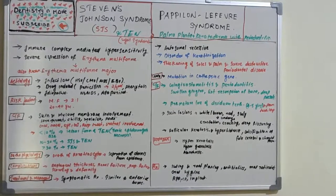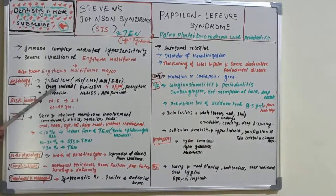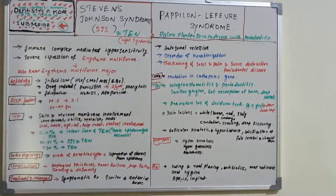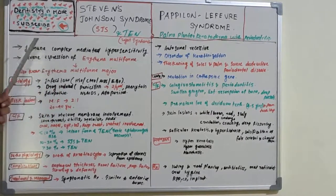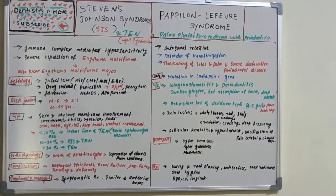Etiology includes infections such as herpes simplex virus, cytomegalovirus, HIV/AIDS, and Epstein-Barr virus, as well as drug-induced reactions. Drug-induced reactions — particularly penicillin — account for two-thirds of total Stevens-Johnson syndrome cases. Other causative drugs include phenytoin, NSAIDs, and allopurinol. It can also be idiopathic. It is classified as an immune complex-mediated (Type III) hypersensitivity reaction.